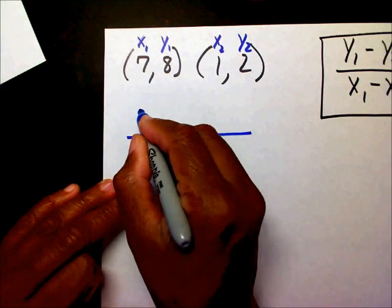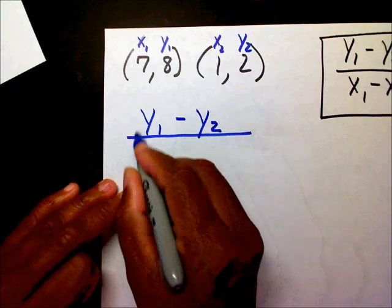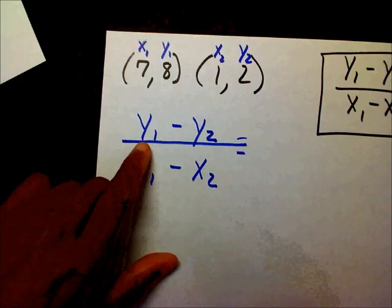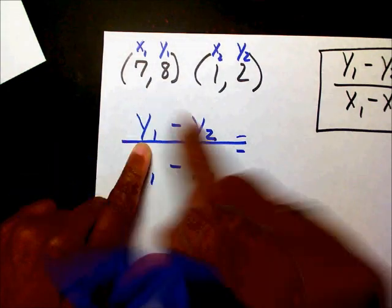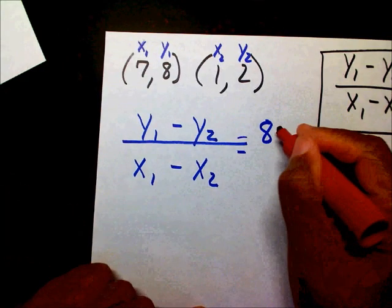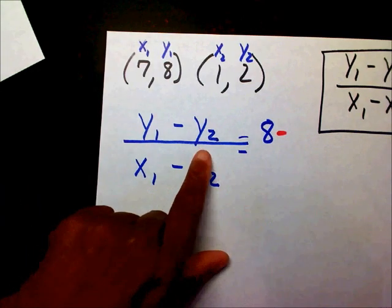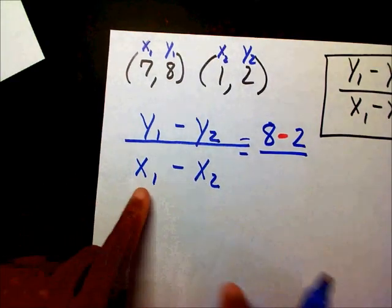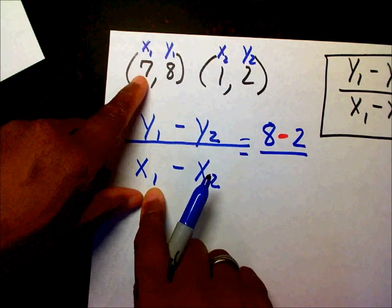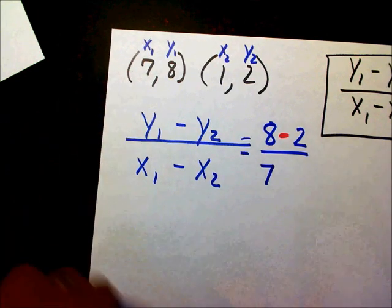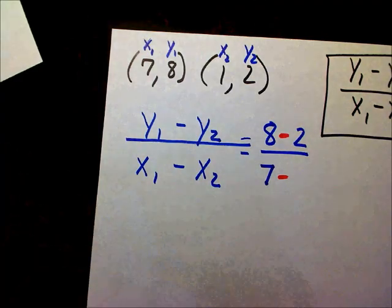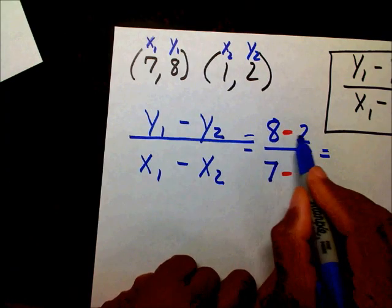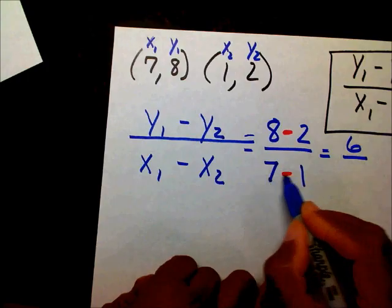Now I can easily substitute into Y sub 1 minus Y sub 2 over X sub 1 minus X sub 2. My first Y is 8, and I subtract my second Y, which is 2. In the denominator, my first X is 7, and I subtract my second X, which is 1. So I get 8 minus 2 over 7 minus 1, which is 6 over 6, which equals 1.